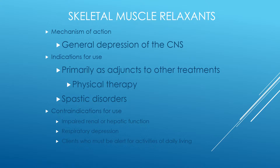The mechanism of action is that these drugs depress the CNS, and the relaxants work by blocking the nerve impulses that cause muscle tone and contractions. Their use is as an adjunct to other treatments such as physical therapy. Contraindications in general include impaired renal or hepatic function. Some of these drugs are extremely hard on the liver and have black box warnings. Because we're dealing with a CNS depressant, we can also have respiratory depression, and these are contraindicated for individuals who need to remain alert.